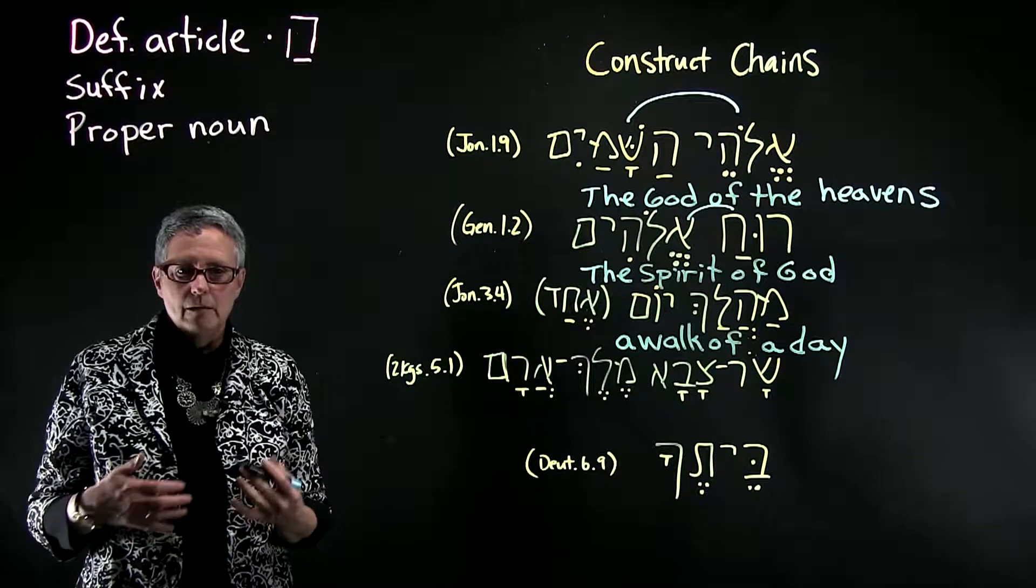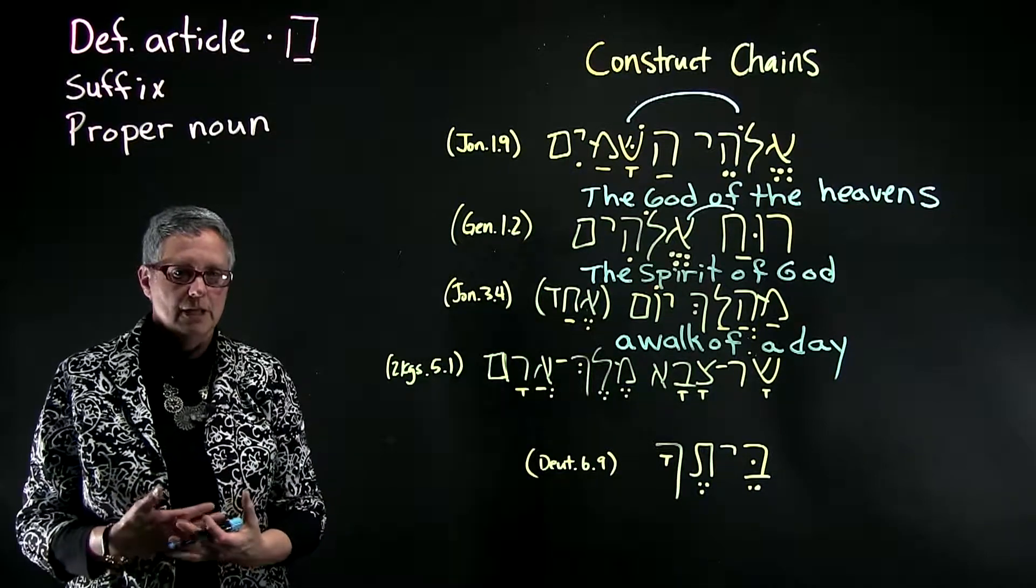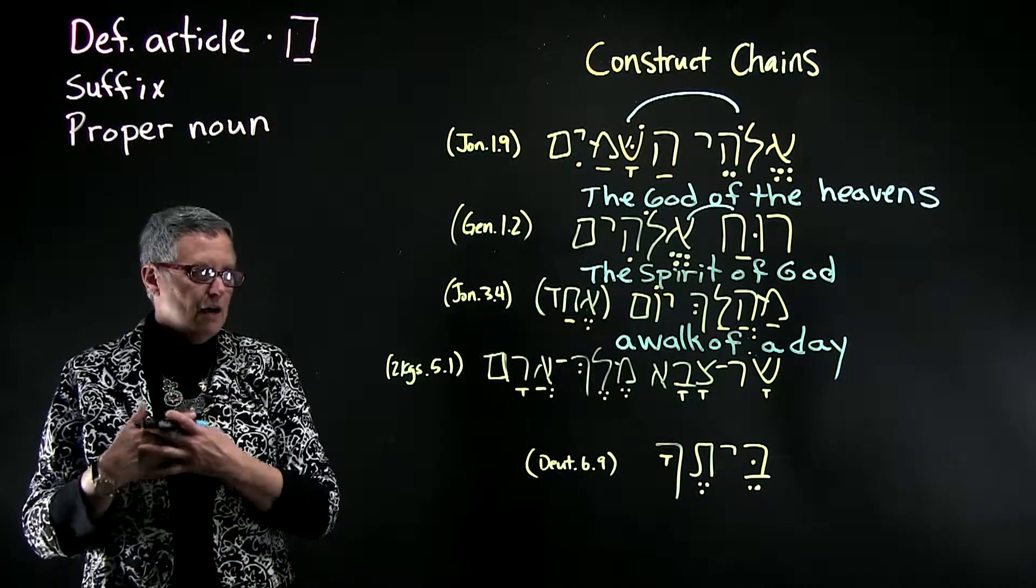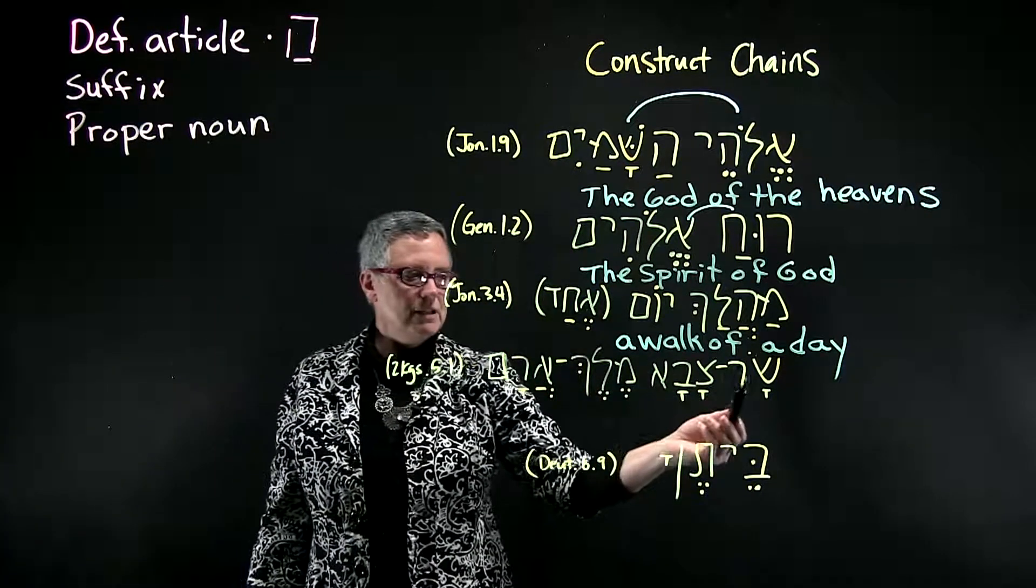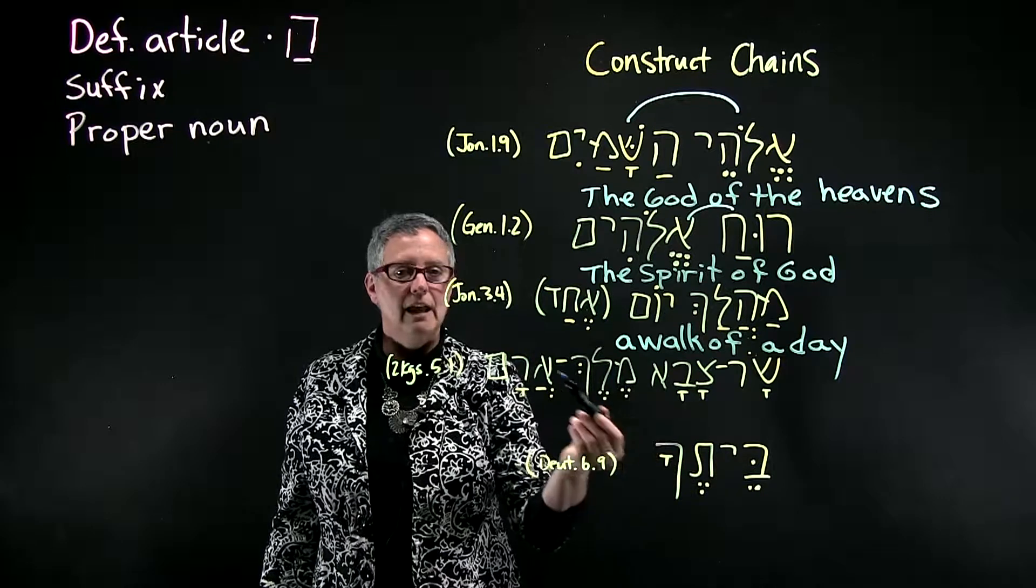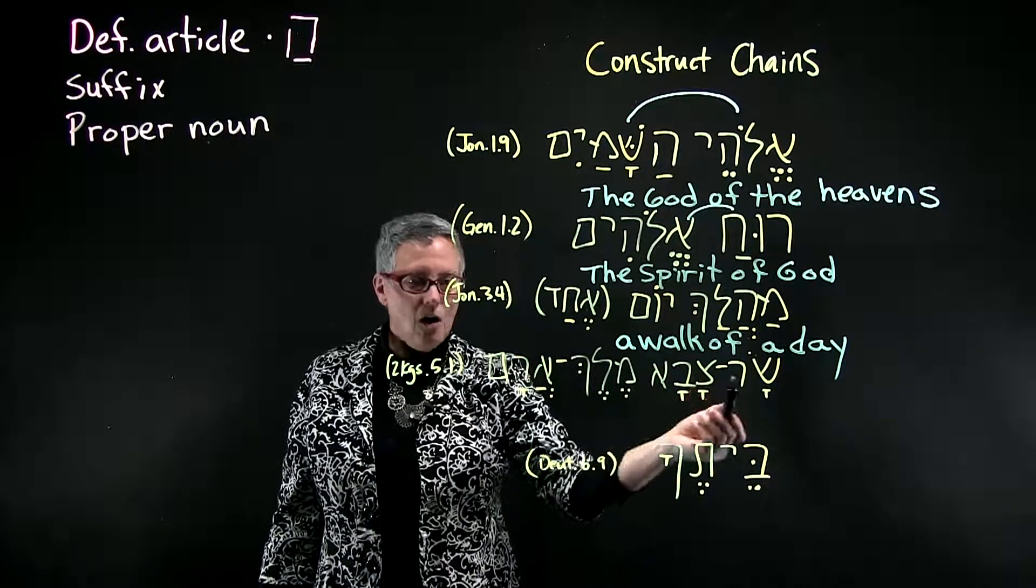There can be more than two nouns in a construct chain. All the nouns that are consecutive are part of the chain. So here we have tsar, tsava, melech, aram. All nouns.